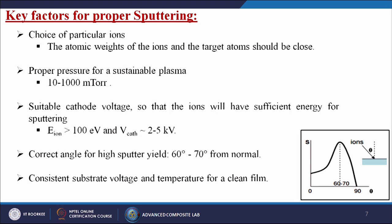Proper pressure for a sustainable plasma: 10 to 1000 milli torr must be maintained inside the chamber. Suitable cathode voltage so the ions will have sufficient energy for sputtering — ion energy should be more than 100 electron volt and voltage at the cathode should vary between 2 to 5 kilo volt. Correct angle for higher sputter yield is 60 to 70 degrees from normal, along with consistent substrate voltage and temperature for a clean film.